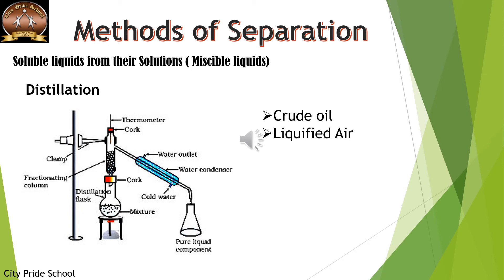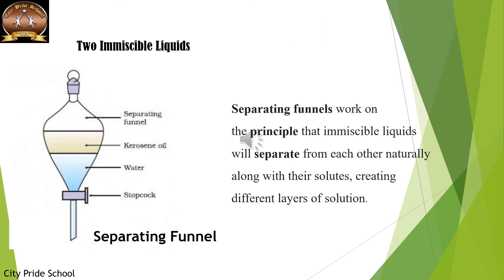To separate two immiscible liquids we use a separating funnel. Suppose oil is mixed with water — they form two separate layers: oil forms a layer above and water forms a layer below because oil is lighter. The mixture is kept in the separating funnel, and when we open the stopcock we drain out the water from below. Once the water drains out, we change the beaker and drain out the kerosene oil as well, thereby separating the two liquids.